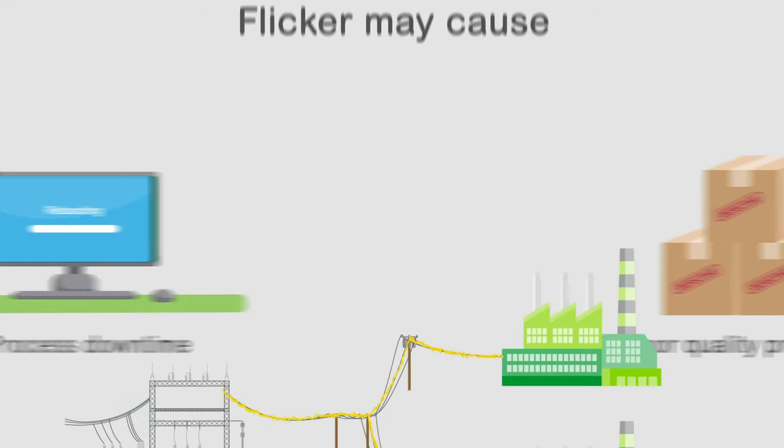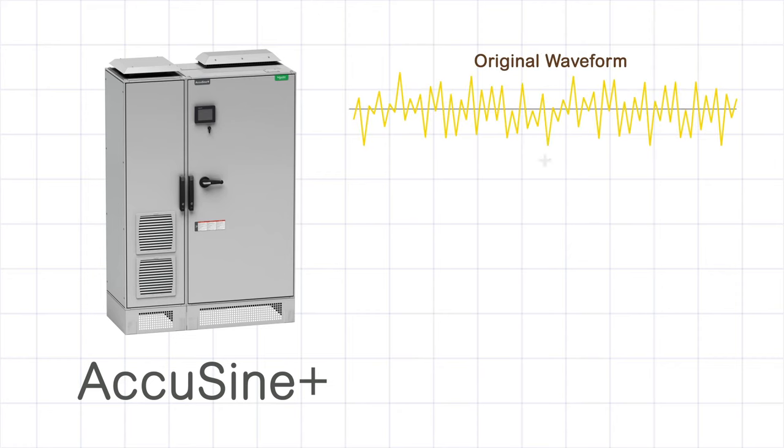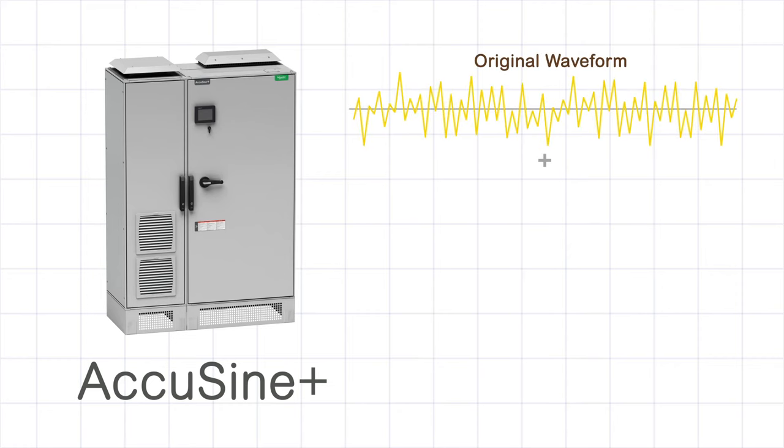Furthermore, utility companies may force the consumer to mitigate flicker if they're creating power quality problems on the utility distribution system. To solve flicker, the AccuSign Plus in power factor mode can be used to inject capacitive reactive power to counteract the inductive reactive power demanded.